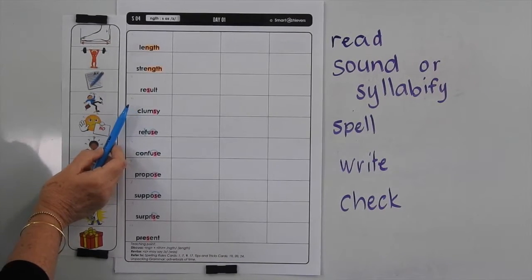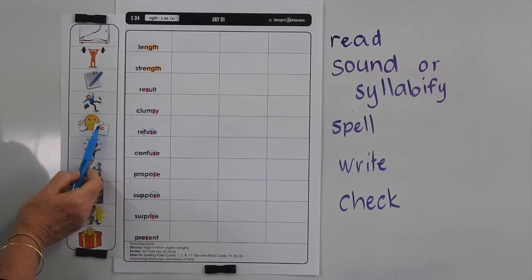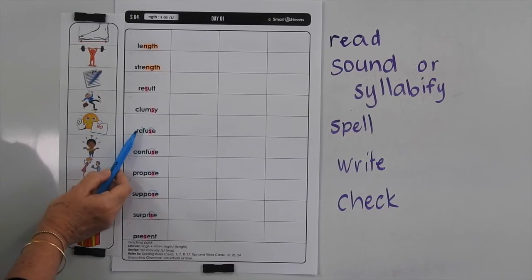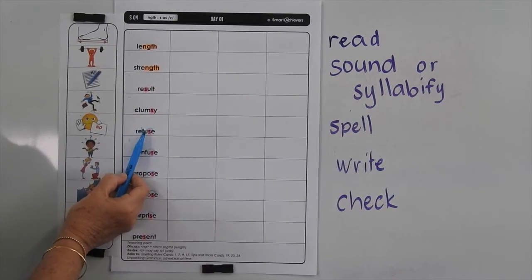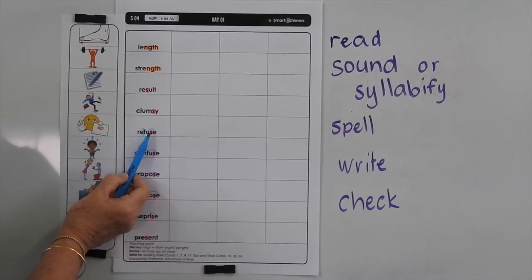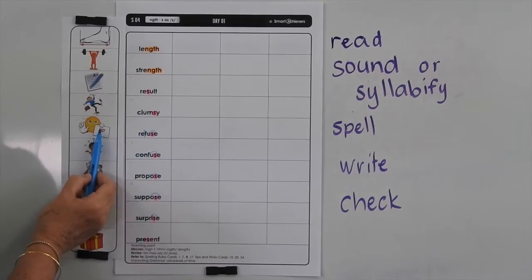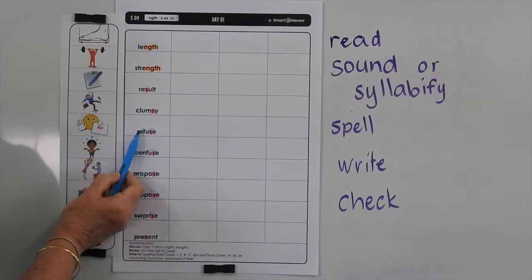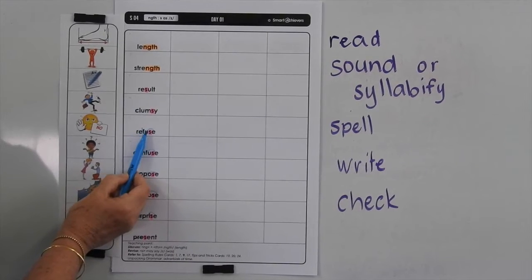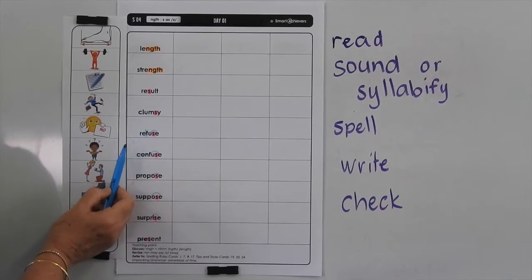Clumsy means someone's quite awkward. Now you could say this two ways: you could say refuse or refuse. If you refuse something, you're saying no to something. But if it's refuse, it means it's rubbish — you're talking about rubbish.